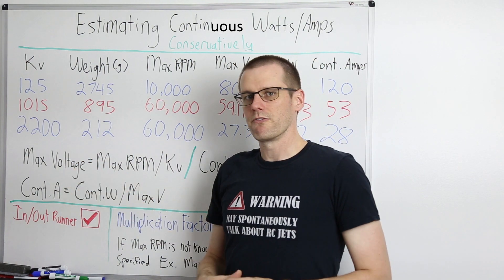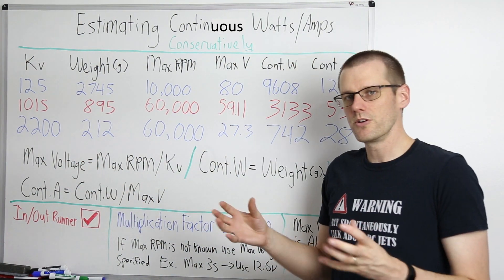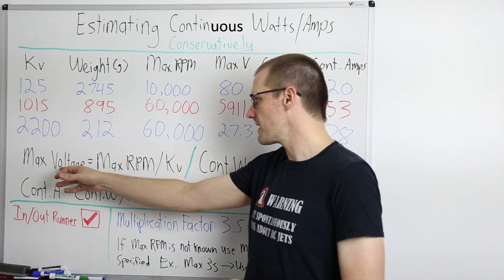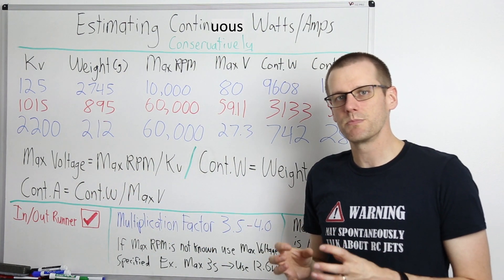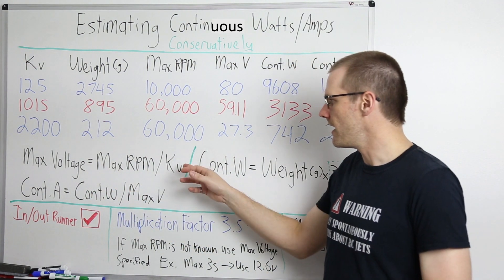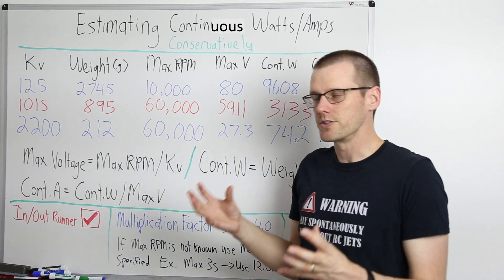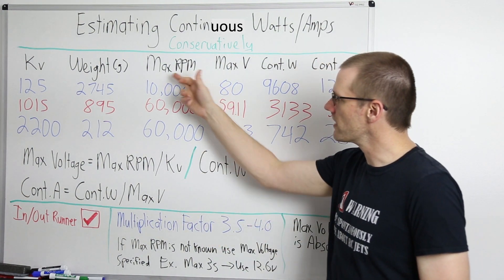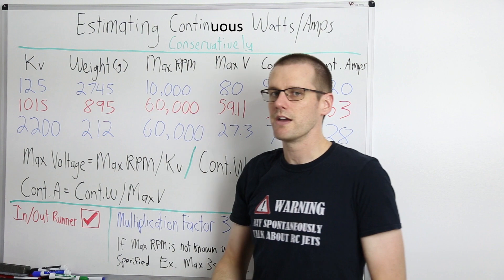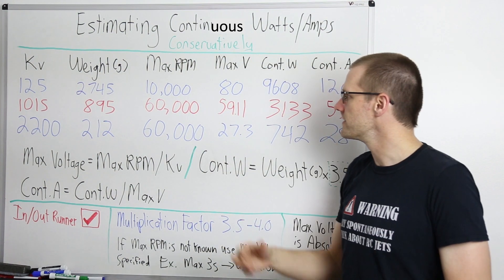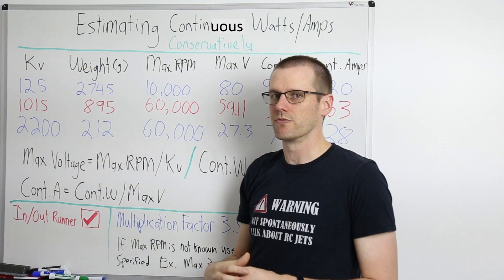Maximum voltage is the first value we calculate. To determine it, take your maximum RPM and divide by your kV value. So here we take 10,000 RPM, divide by 125 kV, and that gives us 80 volts. That's exactly how we get our max voltage.